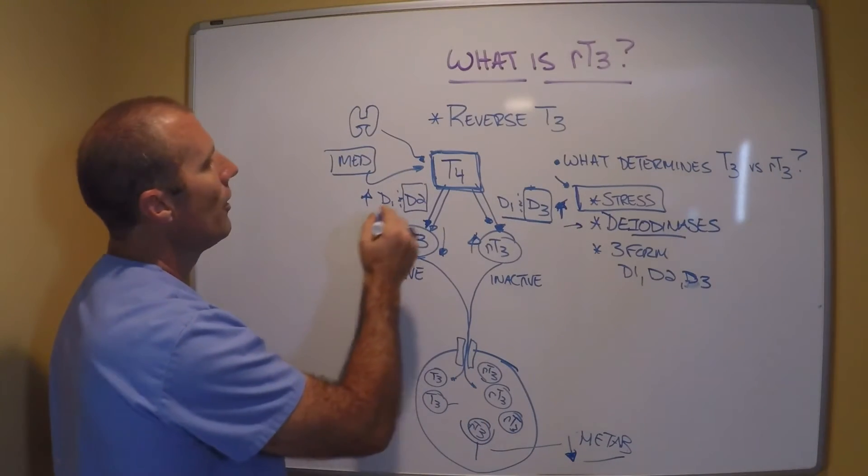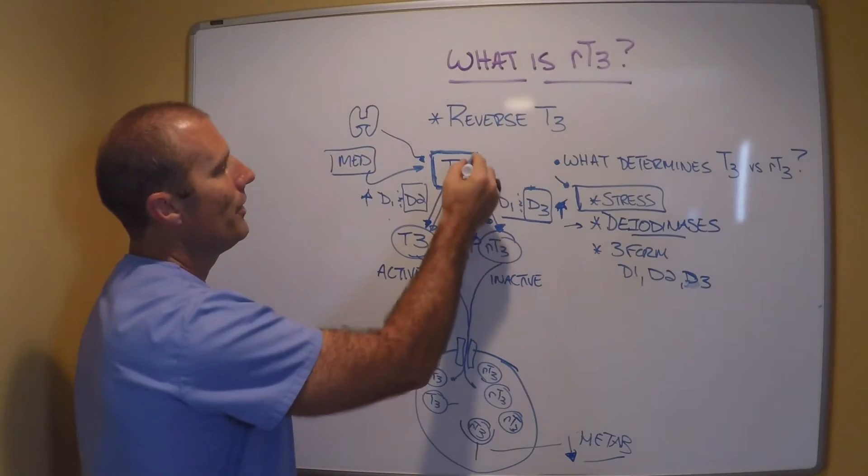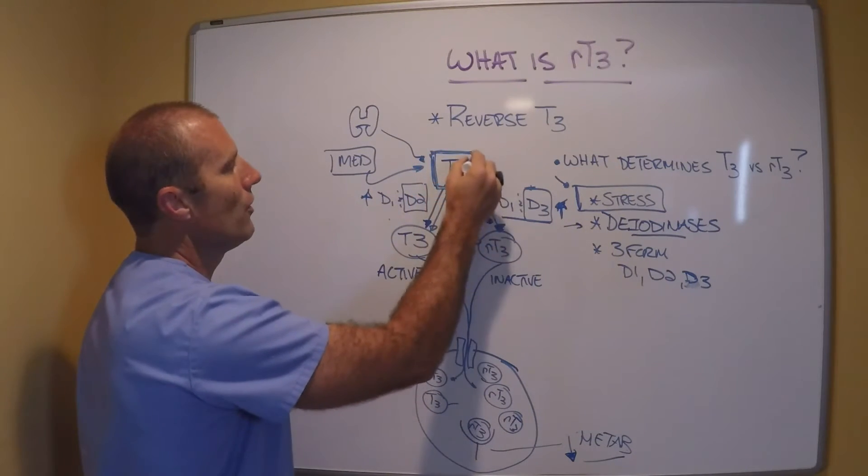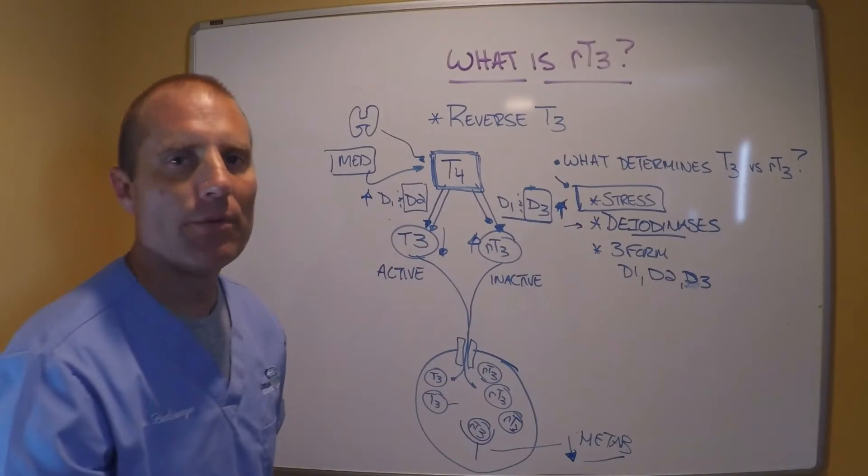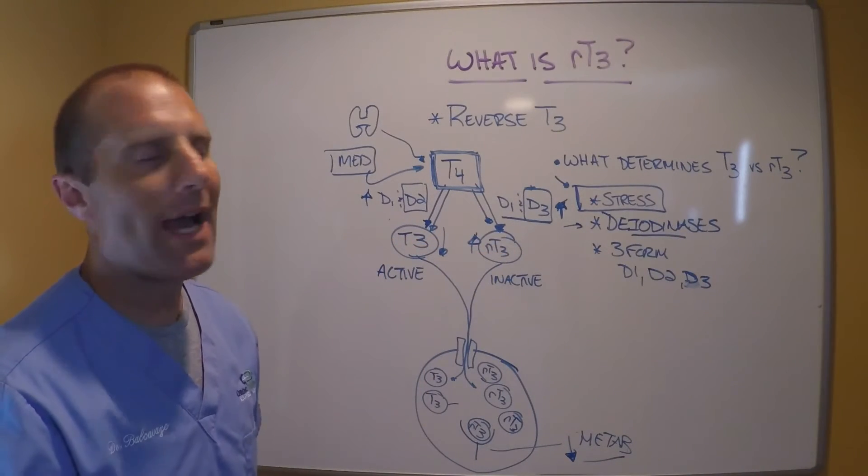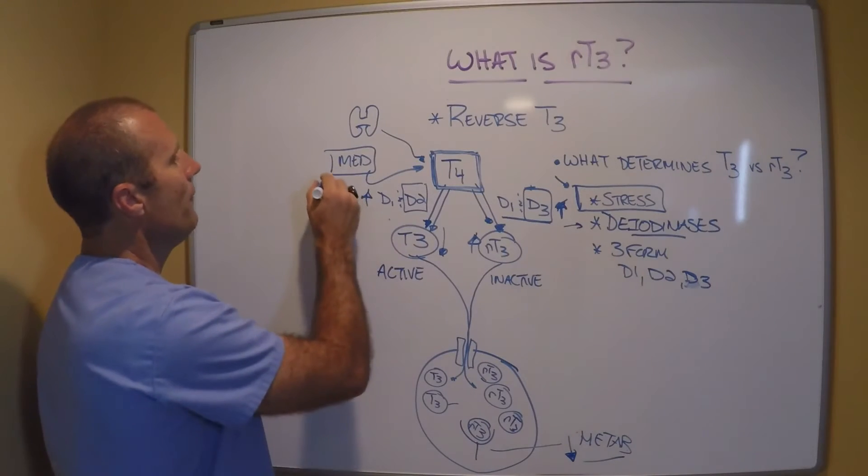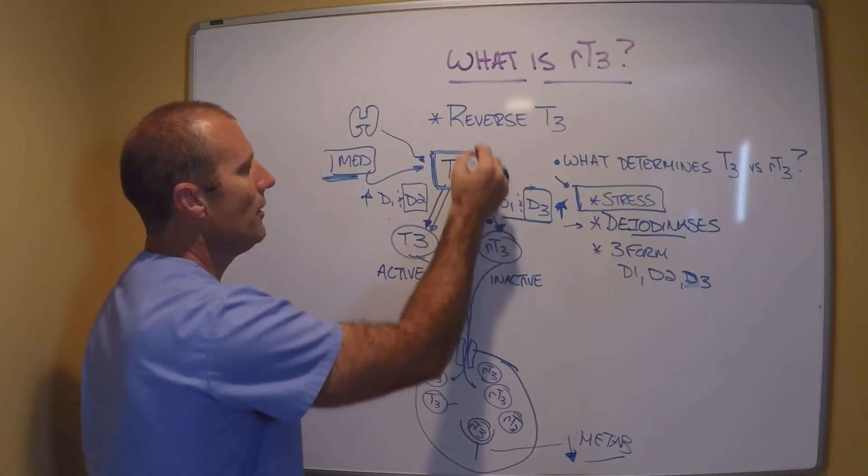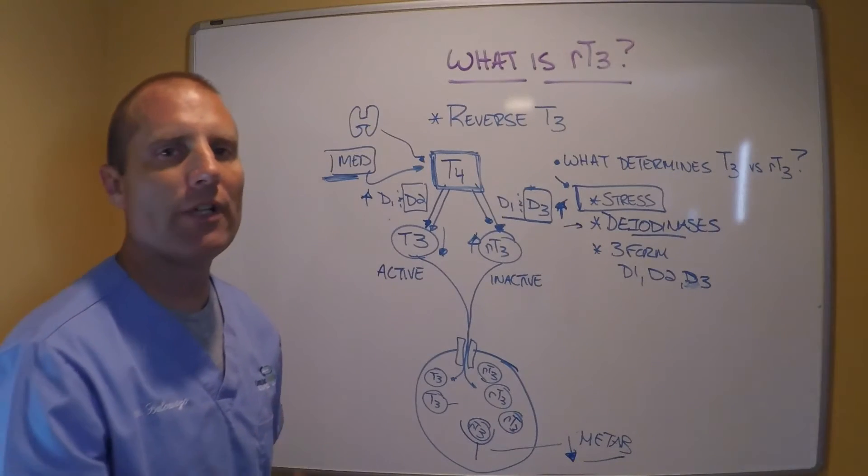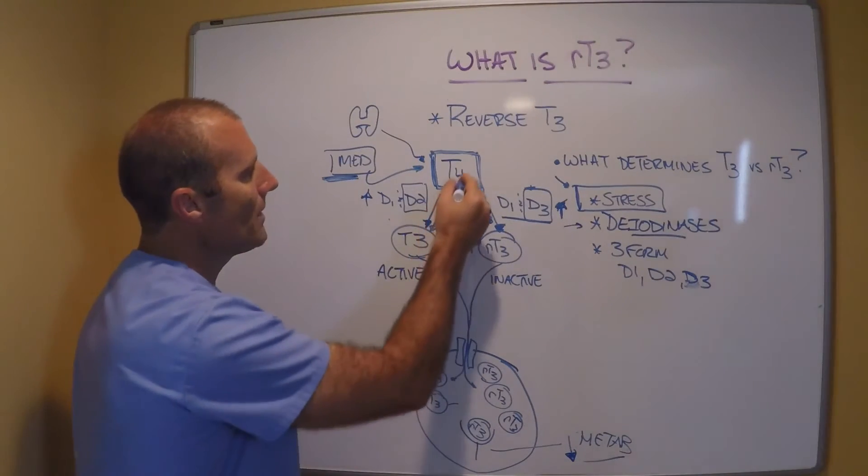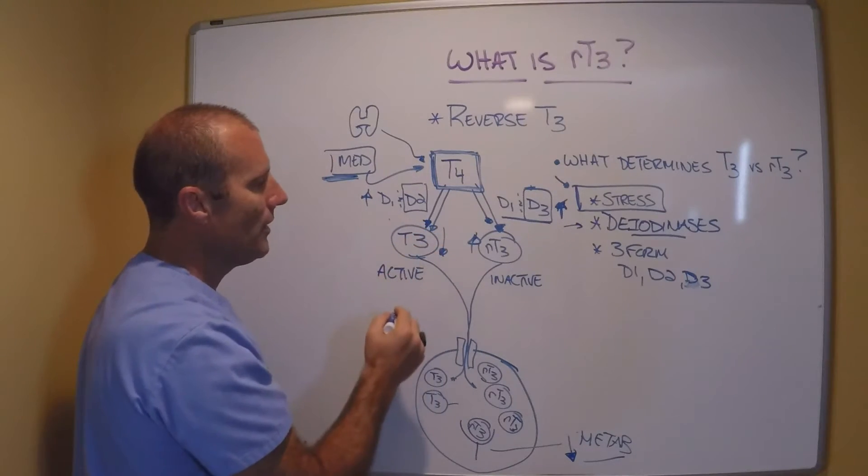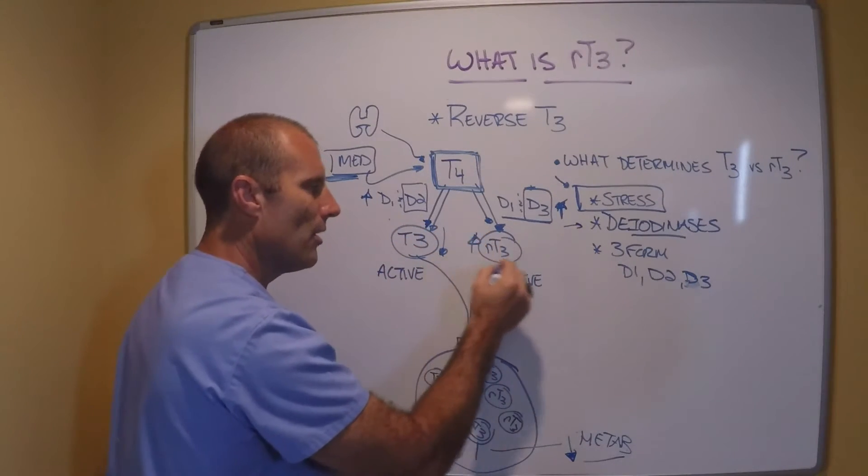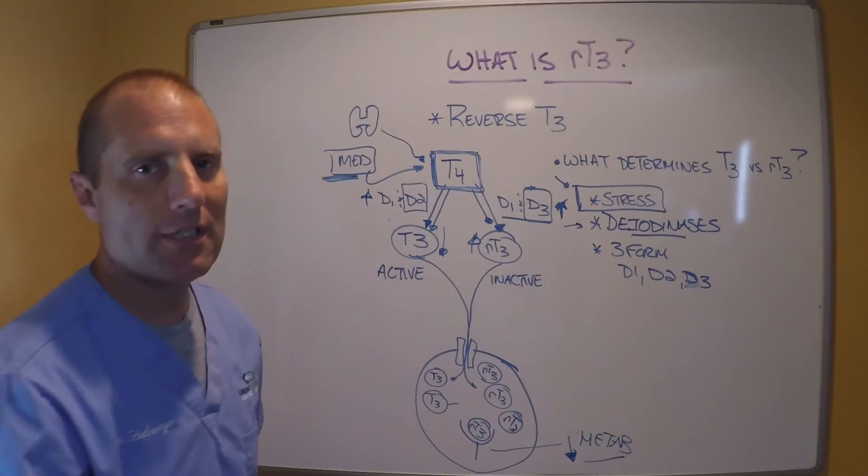So if you are feeling hypothyroid, and your doctor tells you your T4 levels are normal, and they haven't run a T3 and a reverse T3, you need to make sure you ask them to do that. If you're taking thyroid medications, which are primarily T4, again, it becomes critically important to know what's happening to that T4. Is it being primarily converted to T3, or is it primarily being converted to reverse T3?